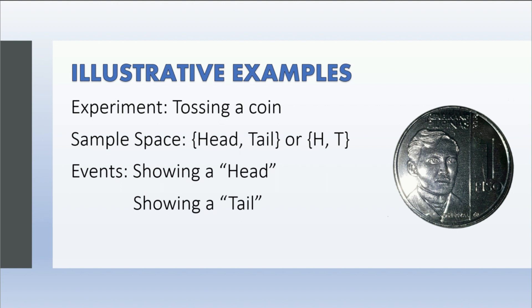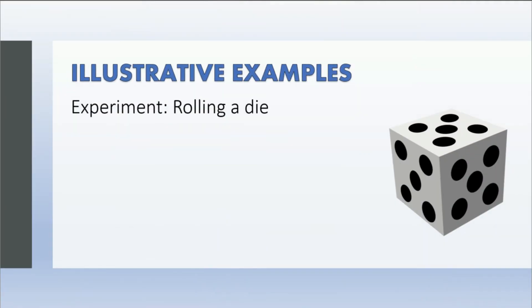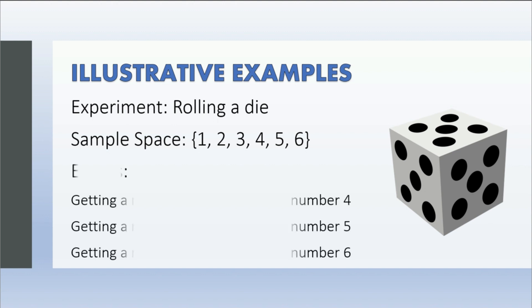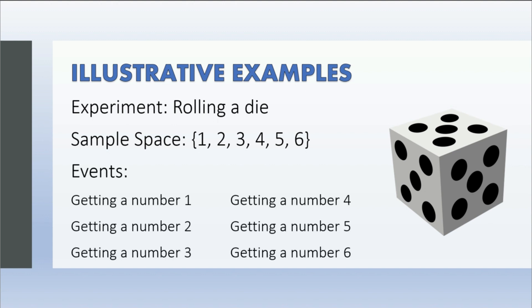Another example is rolling a die. The sample space is all the possible outcomes. We have one, two, three, four, five, and six. And the events: we have getting a number one, getting a number two, getting a number three, getting a number four, getting a number five, and getting a number six.